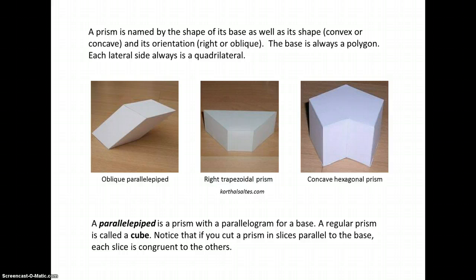Here we have an oblique parallelopiped. A parallelopiped, say that three times fast, is a prism that has a parallelogram for a base. Notice it is oblique, because if we drop a line from the top center to the bottom center, it's not going to be perpendicular to the base or the table.